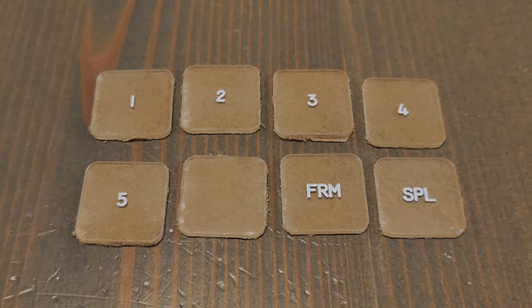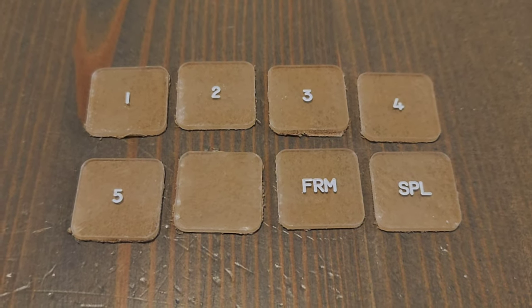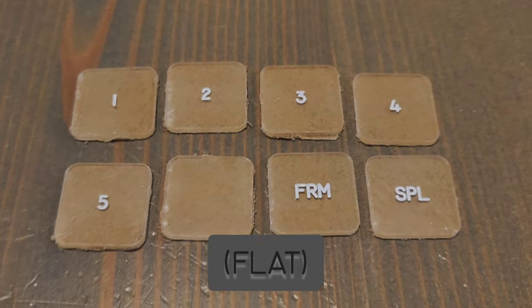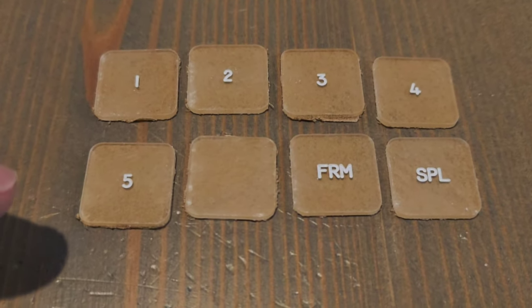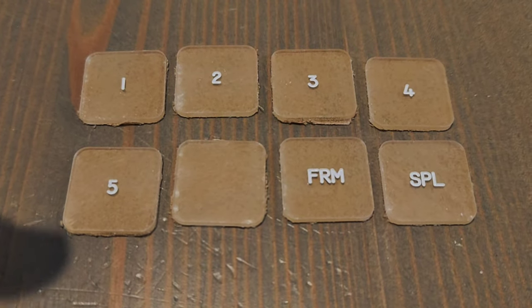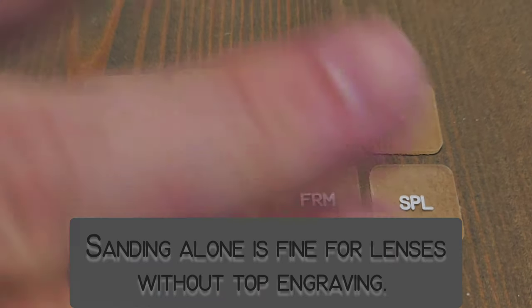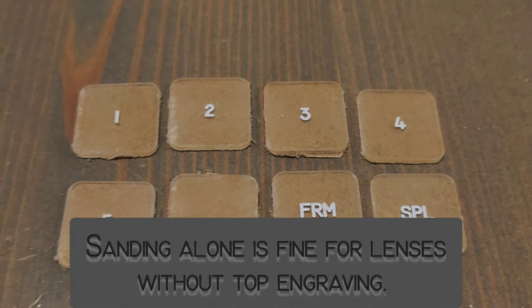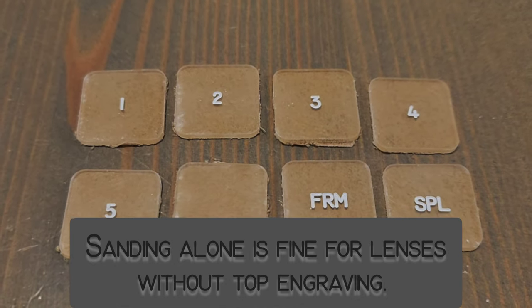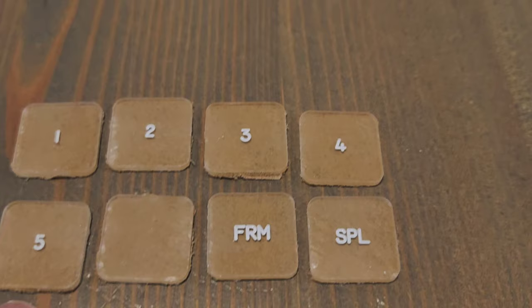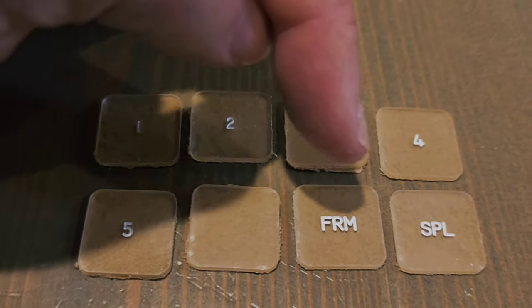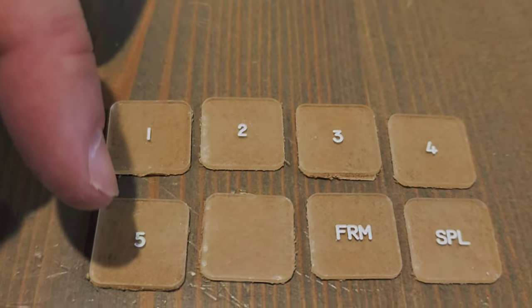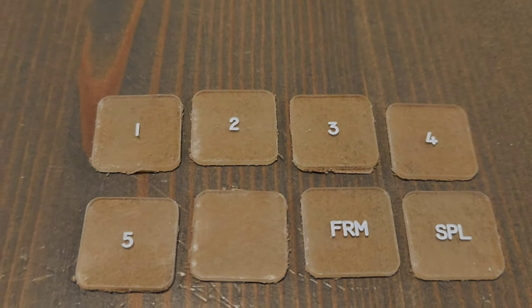It also gives it a much nicer look to it. Even though I've sanded these and taken the shine off, I'm still going to put a coat of Krylon clear matte finish on it because this is model paint, it's not meant to be touched. Over time it will wear off pretty quickly, so I want to protect that. You can see how crisp and clean the paint in the engraving comes out with very light sanding.